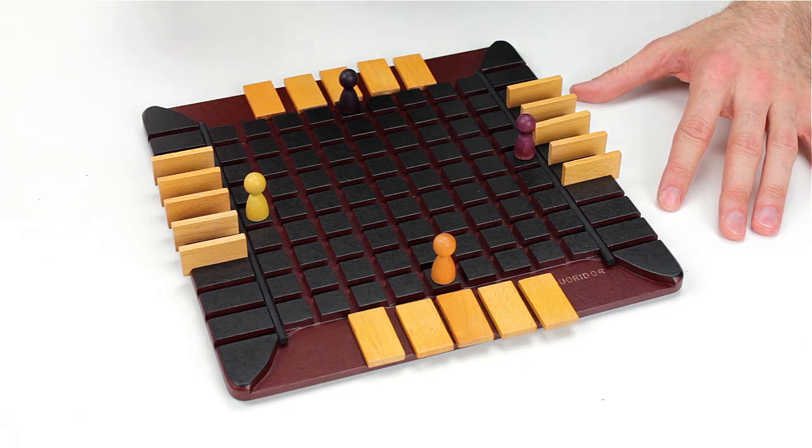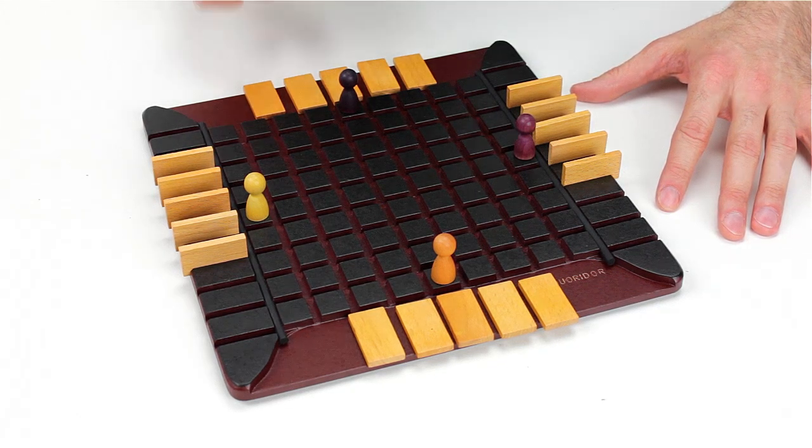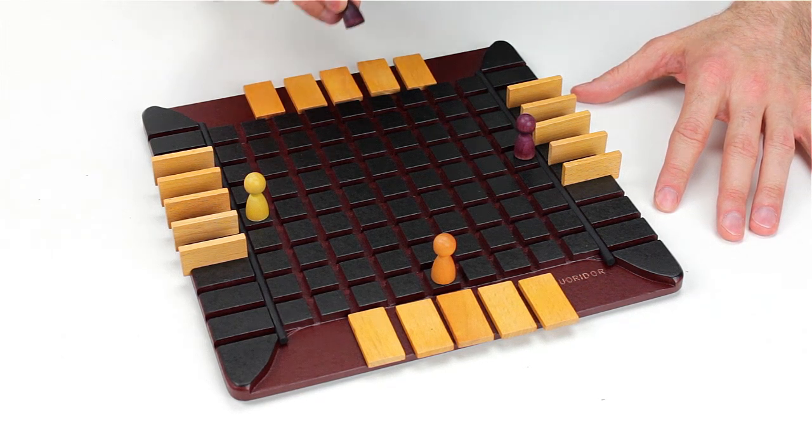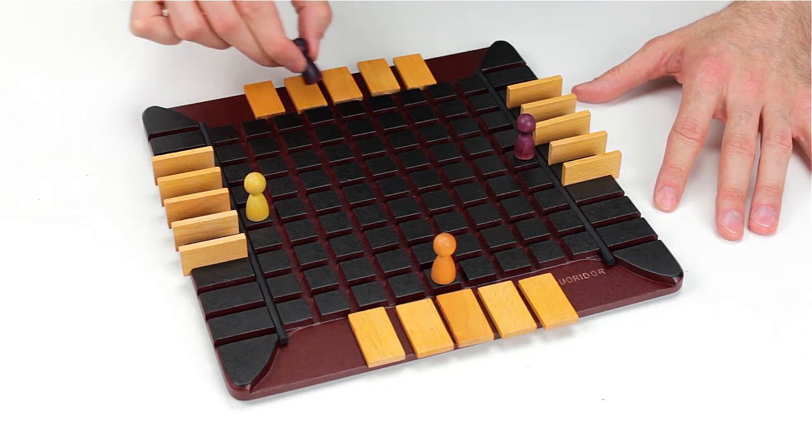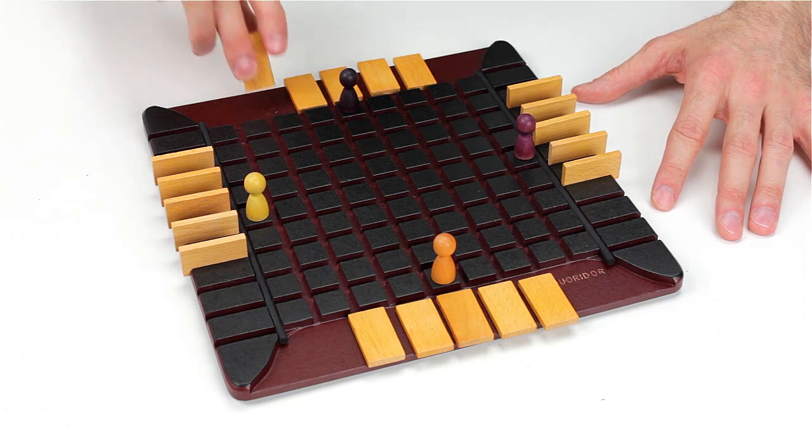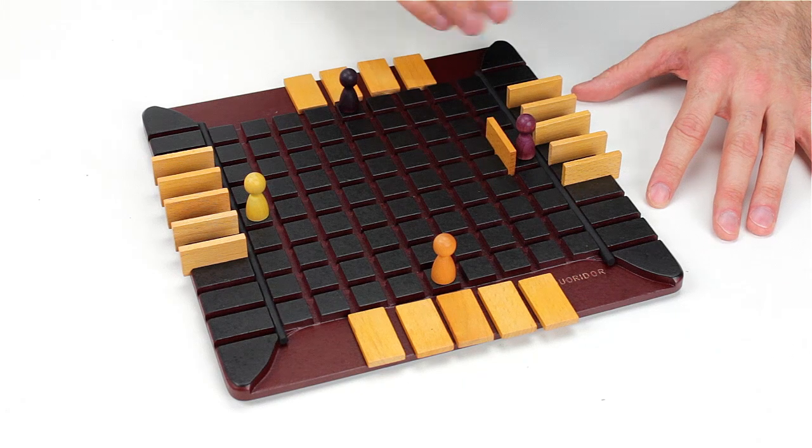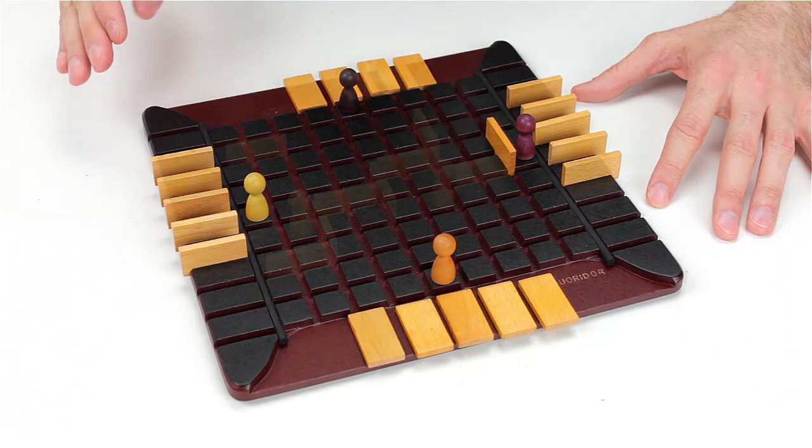On your turn, you have two options. You can either advance your pawn one space forwards, backwards, right, or left, or you can take one of your fences, place it anywhere on the board, making it more difficult for someone else to get across the board.